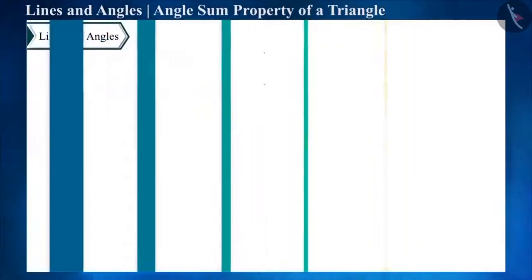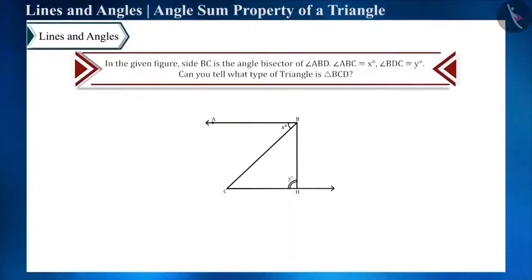In the given figure, side BC is the angle bisector of angle ABD. Angle ABC is equal to x degrees and angle BDC is equal to y degrees. Now can you tell what kind of a triangle is triangle BCD?